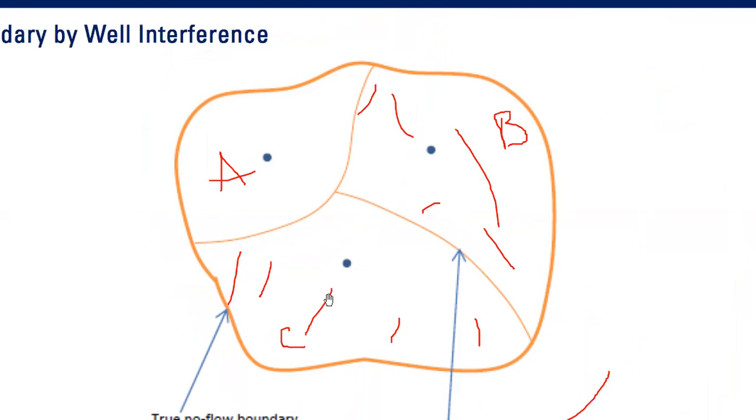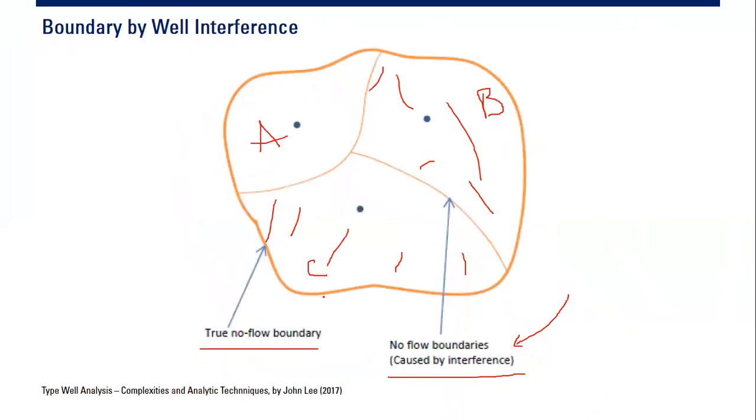In fact, virtual no-flow boundary because of well interference is one of the most common boundaries for wells. Not all wells have adjacent faults that will act as boundary, no. But most of the time wells will have neighboring wells, will have adjacent wells.